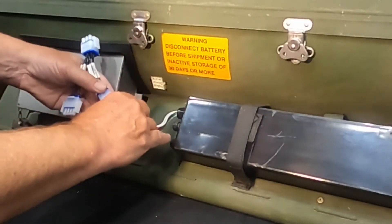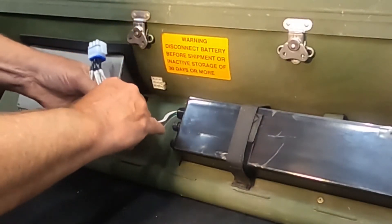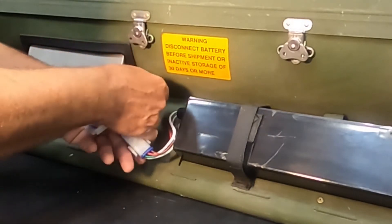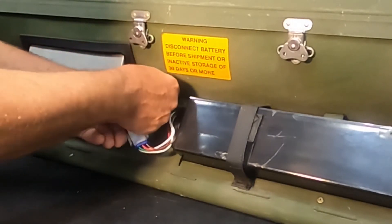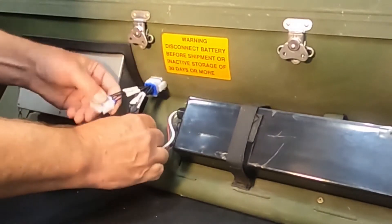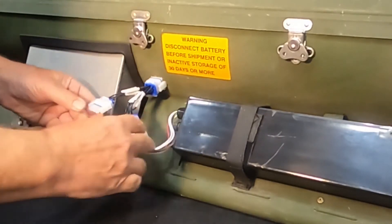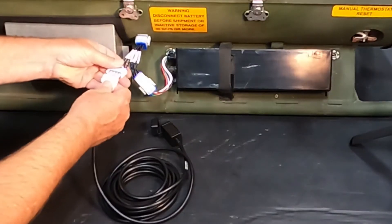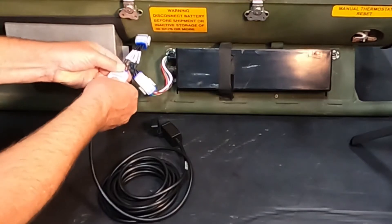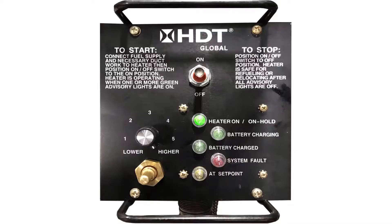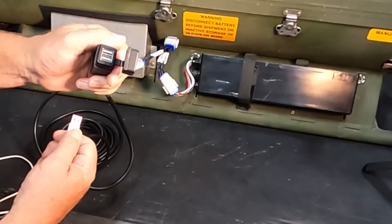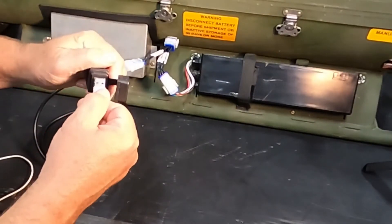To use the UDC, you simply connect the T-adapter to the heater and battery, and then attach the connector from the UDC. Once the battery charging light comes on, you can connect a USB device.